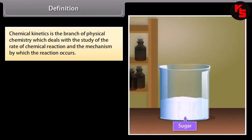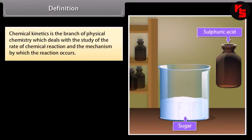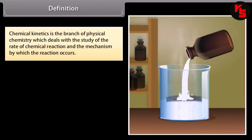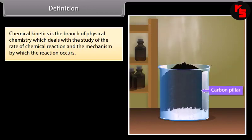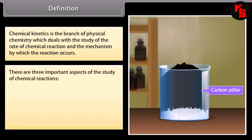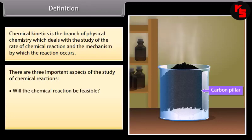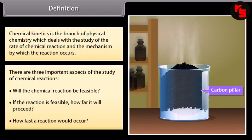Chemical kinetics is the branch of physical chemistry which deals with the study of the rate of chemical reaction and the mechanism by which the reactions occur. There are three important aspects of the study of chemical reactions: will the chemical reaction be feasible? If the reaction is feasible, how far will it proceed? And how fast will a reaction occur?